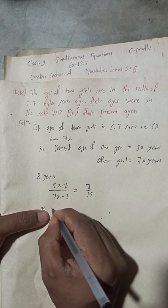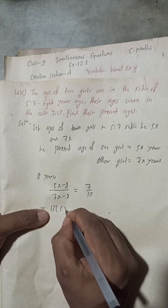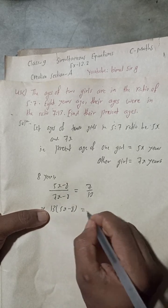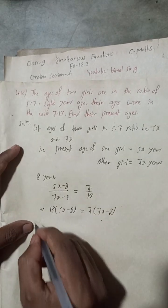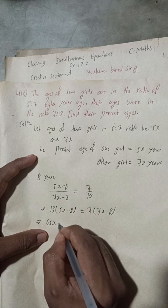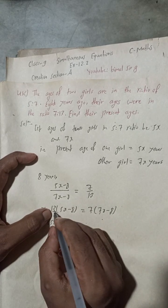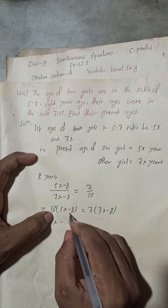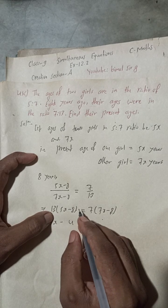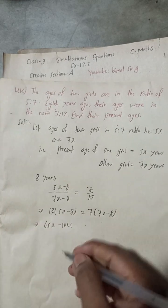Cross multiplying: 13 times (5x − 8) equals 7 times (7x − 8). This gives 13 × 5x = 65x, and 13 × 8 = 104. So we get 65x − 104 on the left side.